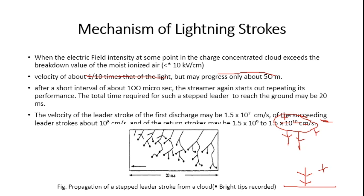There are many branches formed. Whichever branch is capable of making contact between the cloud and the ground is considered the leader. You can see many branches in the figure. The leader comes and halts at a point. After a short interval of about 100 microseconds, the streamer again starts repeating its performance — gaining potential again and jumping — because the field intensity is insufficient to build the electric charge at its head.